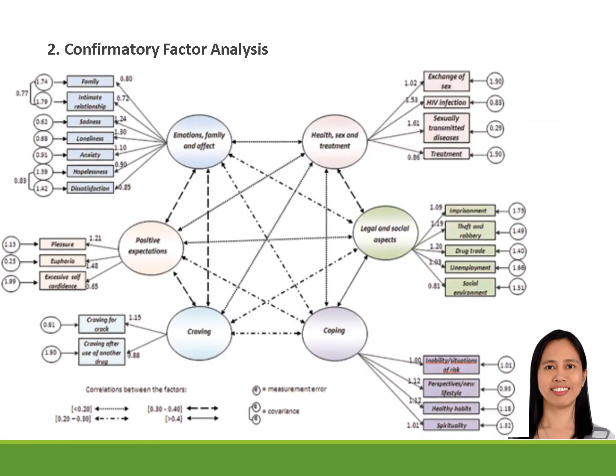Another is the confirmatory factor analysis. Once the factors are identified, the CFA or confirmatory factor analysis is used to determine the factors and the factor loading of measured variables and to confirm what is expected on the basic or pre-established theory. This is the reason why it is difficult to develop a multidimensional instrument from scratch. The most practical way for a researcher is to adopt or validate a reliable instrument and modify some of the items or terms used to fit into the intended target population.